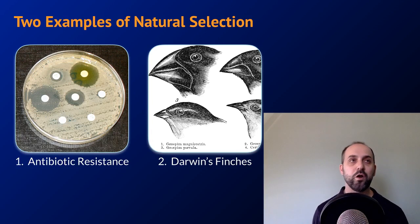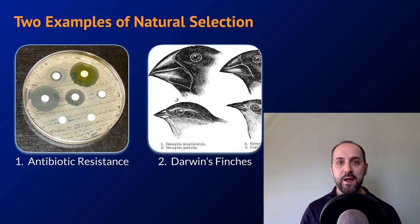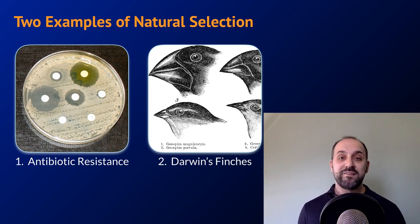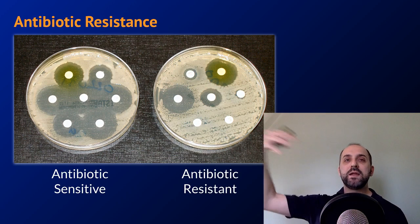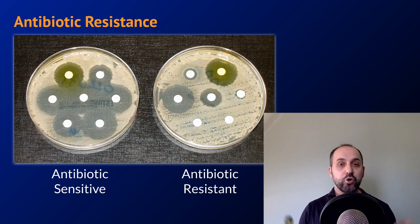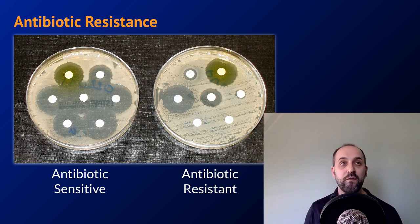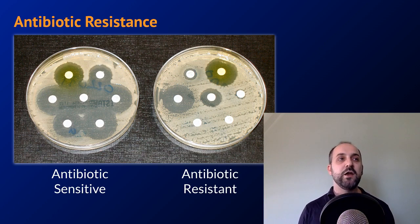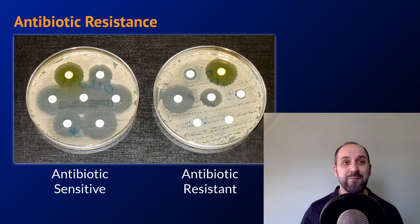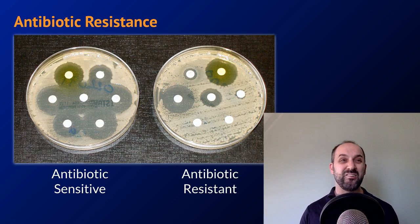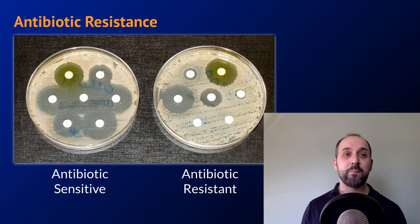It's always good to have a couple of examples under your belt for evolution or anything in AP Biology — you always want examples because the exam is going to want different examples. We're going to talk about two really classic examples of natural selection. The first is antibiotic resistance in bacteria. Over time, bacteria have evolved and become resistant to different antibiotics. This is showing two different plates where bacteria are grown and disks of different antibiotics are placed on each plate. You can see the antibiotic-sensitive species is being killed off by all the disks, but the antibiotic-resistant species is not being killed off by all of the antibiotics — some are not affecting it at all.